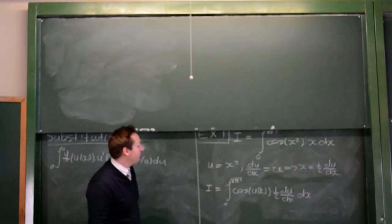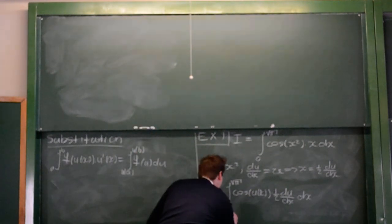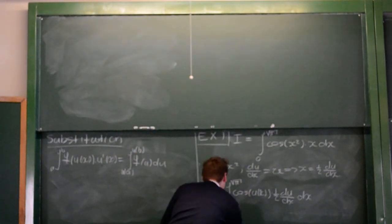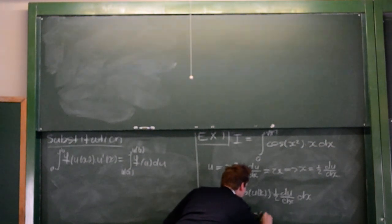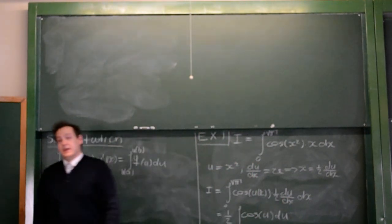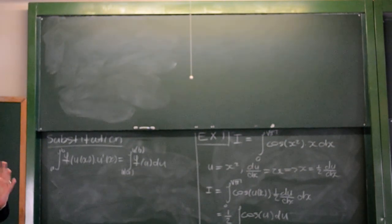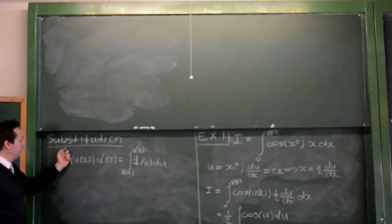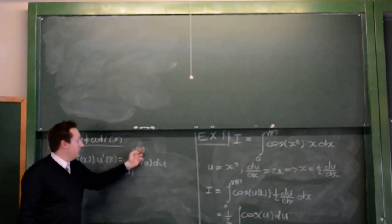We have to now apply the substitution rule. Well, the substitution rule says that this integral equals the integral of just cos of u du. And remember, we have to change the bounds of integration as well. Here we have integrated from a to b, and here we have integrated from u of a to u of b.